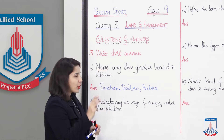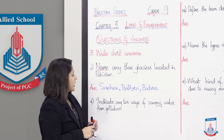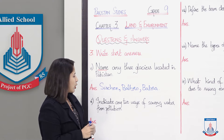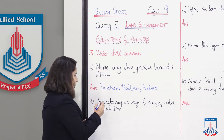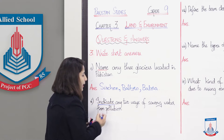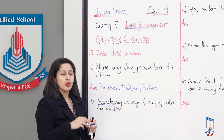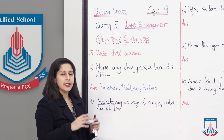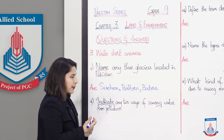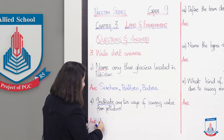The next question is: Indicate any two ways of saving water from pollution. The keyword here is 'indicate' — we have to point out two ways through which we can save water from pollution. So the first way is we should correct ourselves — we should not litter.